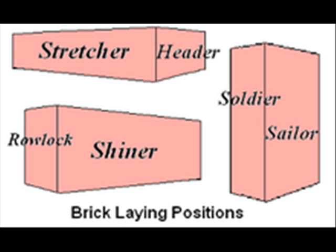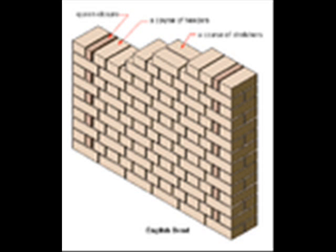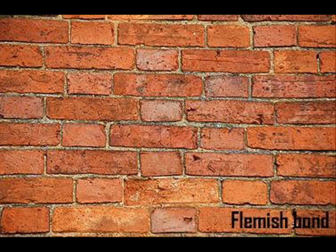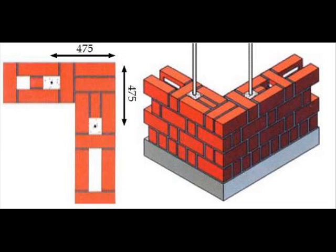The manner in which bricks overlap while laying them is called the bond. There are several types of bonds developed in different countries from time to time. Some of them are called stretcher bond, English bond, Flemish bond, and the rat trap bond.